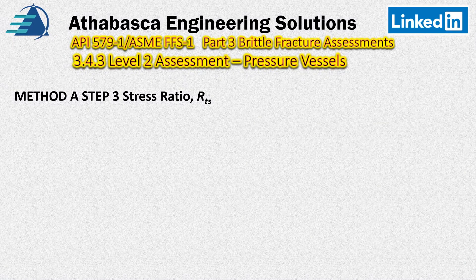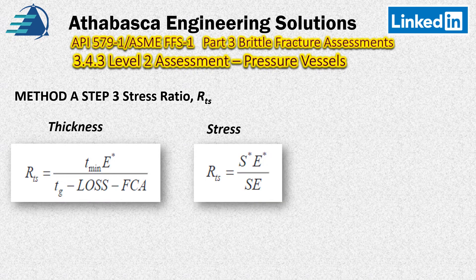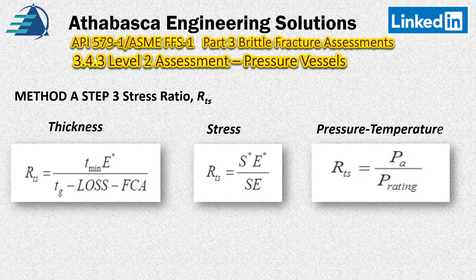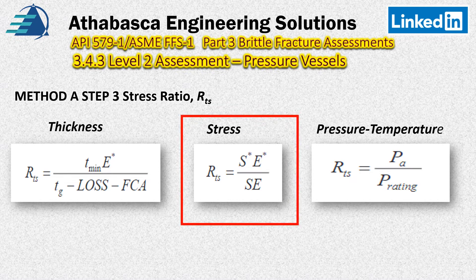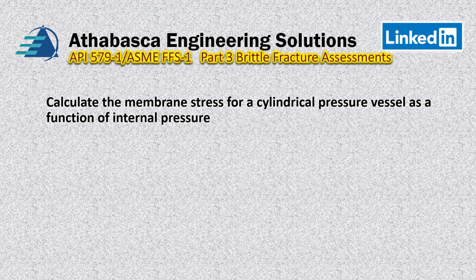Moving to Method A, Step 3 — the stress ratios. As we've seen in previous episodes, we have a thickness ratio, a stress ratio, and pressure-temperature ratios that can be used. The pressure-temperature ratio approach is often desirable because it doesn't require a lot of detailed analysis, but in this particular example we're going to be looking at the stress ratio.